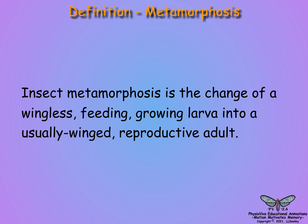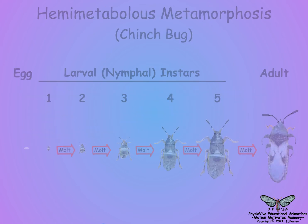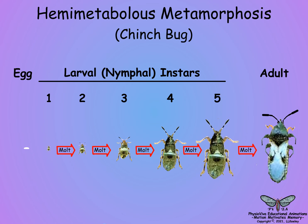For insects, the degree of change during metamorphosis is a function of the degree of similarity between the structures of the larva and the adult. If the larva and adult are similar, as with nymphs and adults of hemimetabolous species, then metamorphosis is slight.